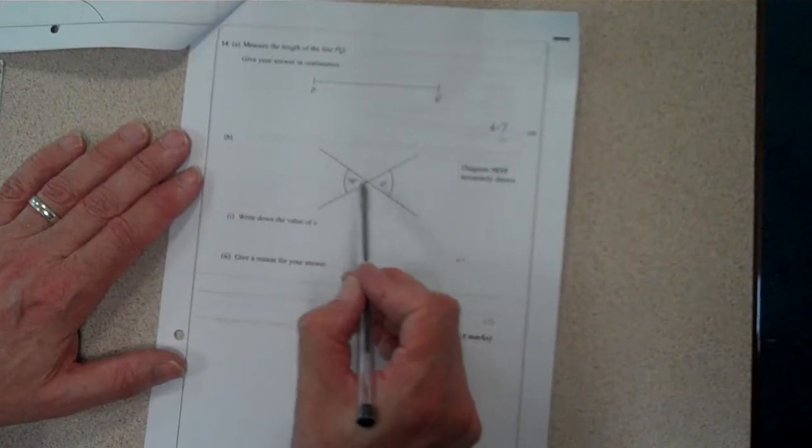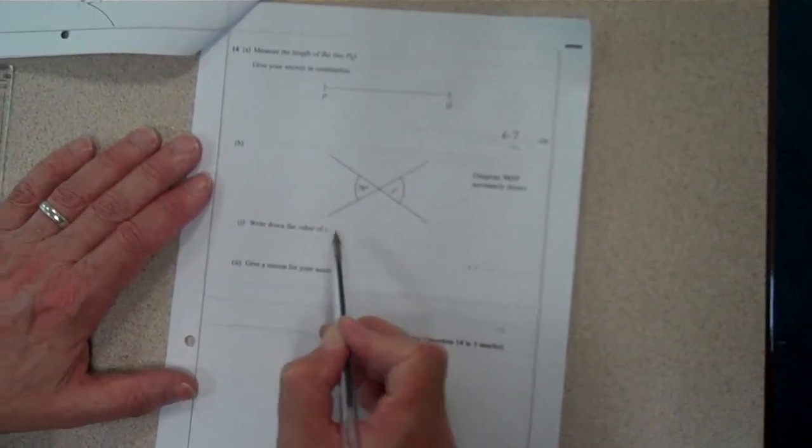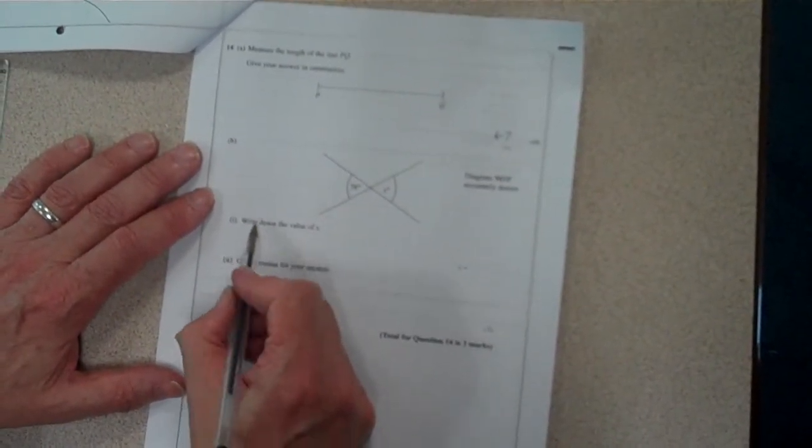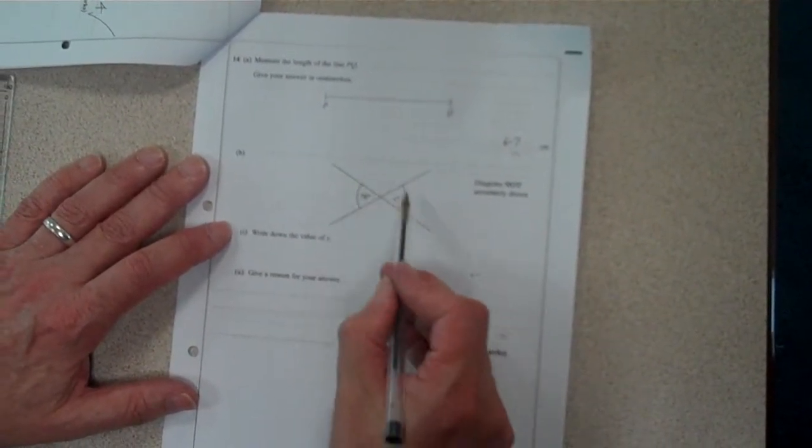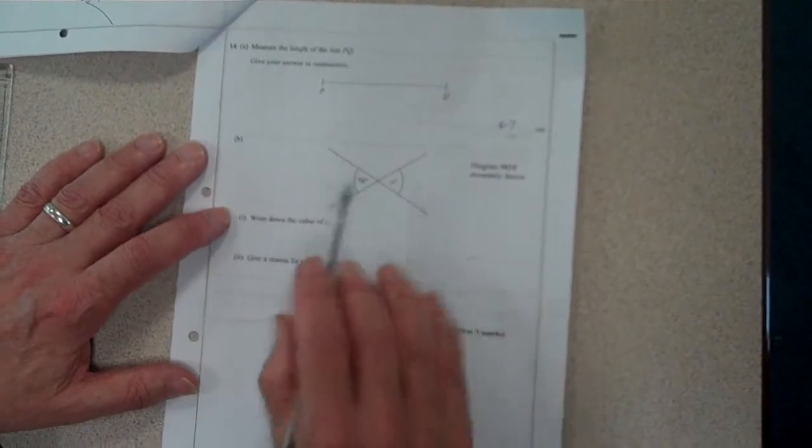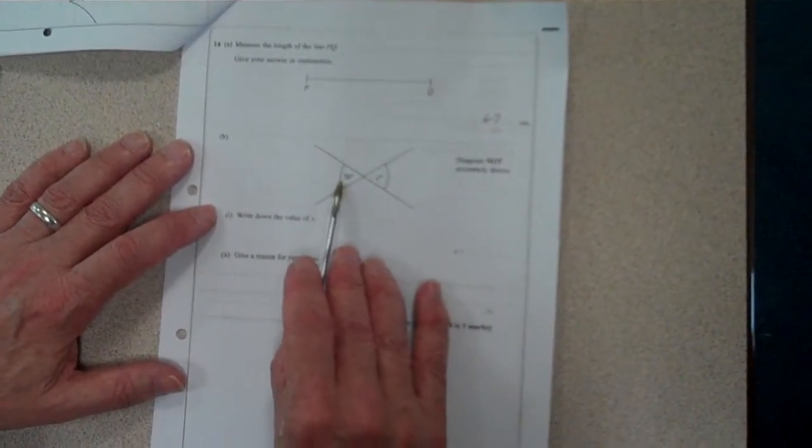However, the question says write down the value of x which is a hint that you need to use your knowledge of angle facts and this is a classic example of a bow tie angle or opposite angles.